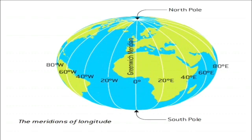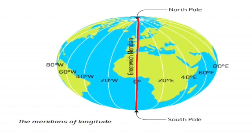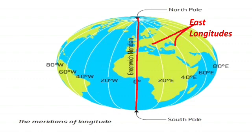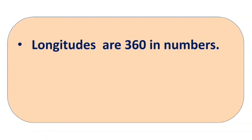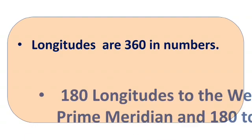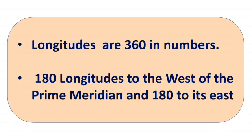Now look at the picture. The meridian that passes through Greenwich is called the prime meridian and it is at zero degrees longitude. The longitudes to the east of Greenwich are called East longitudes, shown with E, and the longitudes to the west of Greenwich are called West longitudes, shown with W.